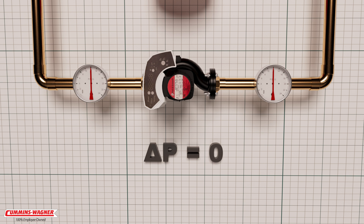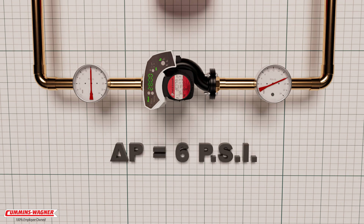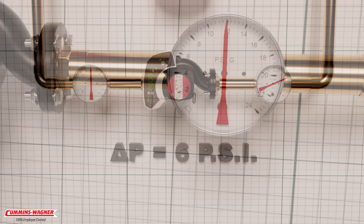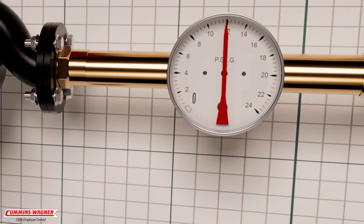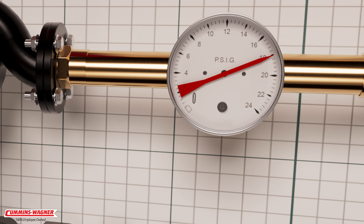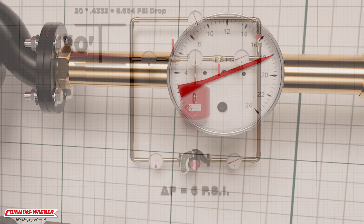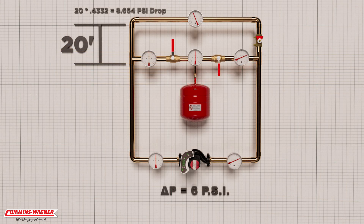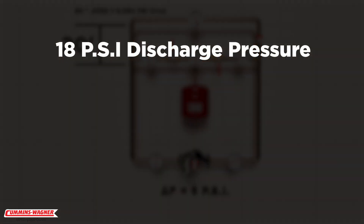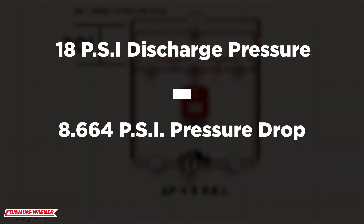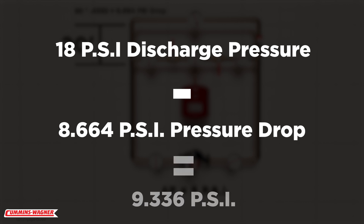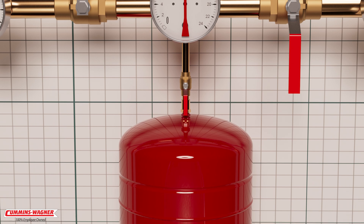It's important to remember that a circulator will always create a differential pressure when energized. In this example, our circulator generates a differential, or delta-P, of 6 psi. This increases the static pressure of 12 psi at the discharge of the circulator to a dynamic pressure of 18 psi. If we subtract the pressure required to get to the top of the system — 18 psi discharge minus 8 psi pressure drop — we are left with less than 10 psi at the top of our system.